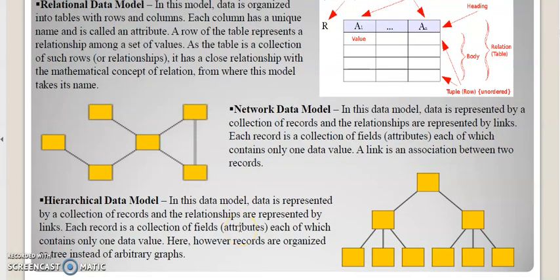And next is the hierarchical model. In this data model, data is represented by a collection of records and relationships are represented by links. Each record is a collection of fields, attributes, each of which contains only one data value. Here, however, records are organized roughly instead of arbitrary graphs. Hierarchical data models are organized in the form of roots and branches and subbranches.